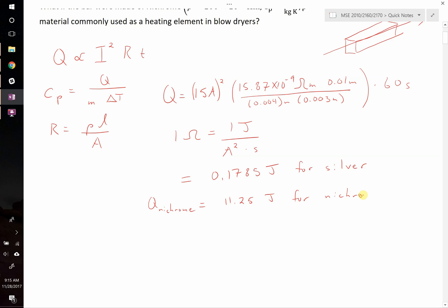So clearly, the silver is not generating as much heat as the nichrome. The nichrome is generating a lot more heat, which makes sense. They use it for heating elements. So the next step is to figure out how much temperature change we're going to see.